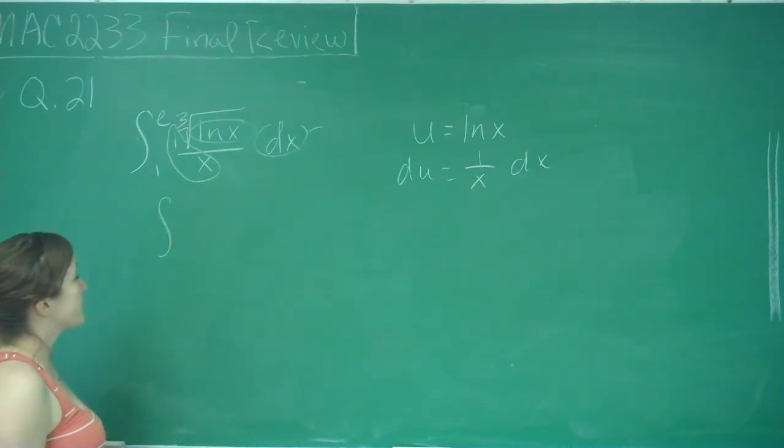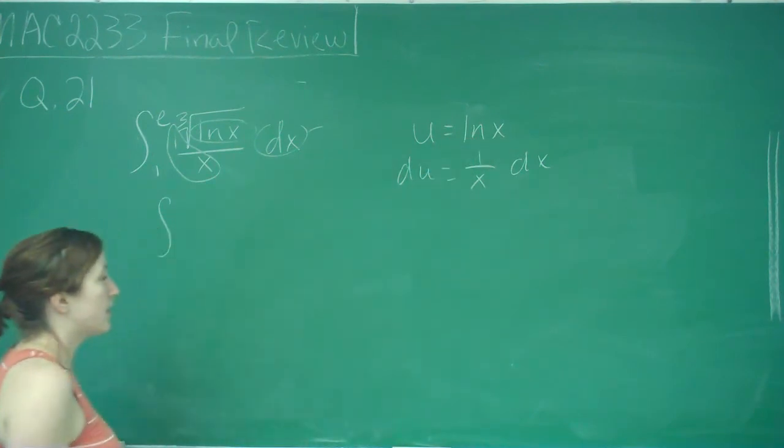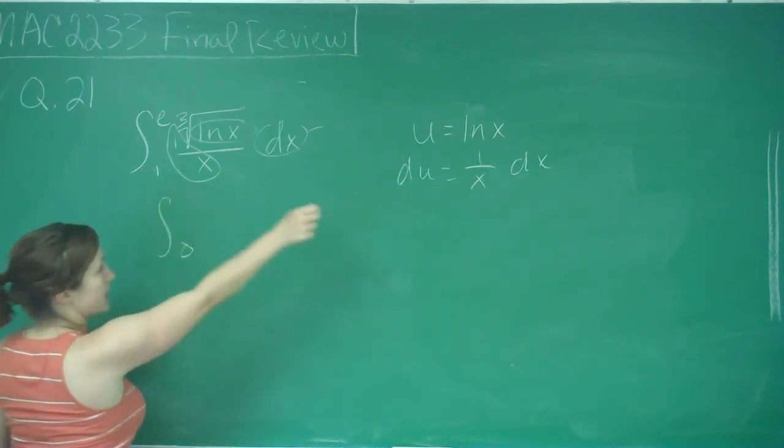And I'm going to go ahead and change my boundary. So when I plug in 1 to ln x, I get 0, and when I plug in e, I get 1.